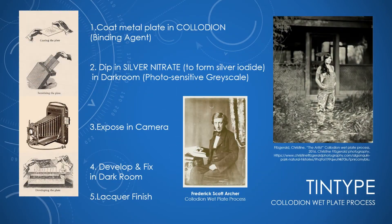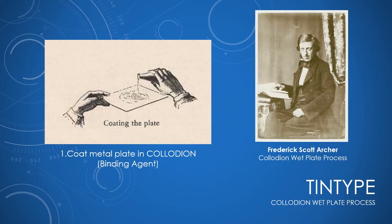The next thing I want to cover is tintypes, or the collodion wet plate process — something I've actually had experience with through Christine Fitzgerald, a Canadian tintype photographer. This process was wildly successful when it came about because you could develop pictures in about 15 minutes, which for the time period was very short. Frederick Scott Archer is accredited with inventing the collodion wet plate process, which preceded the gelatin emulsion dry plate process. Amazingly, he chose not to patent it and published it in The Chemist in 1851, sharing his knowledge freely with everyone.